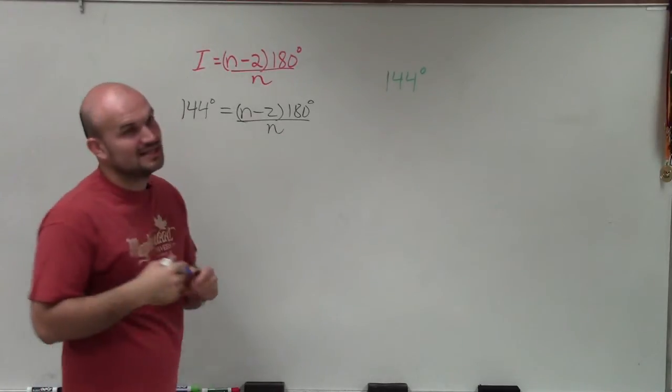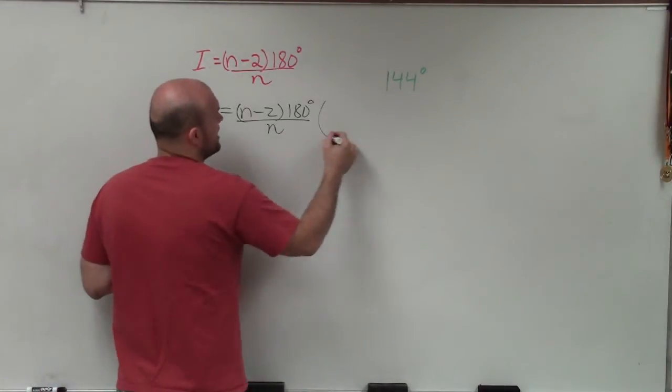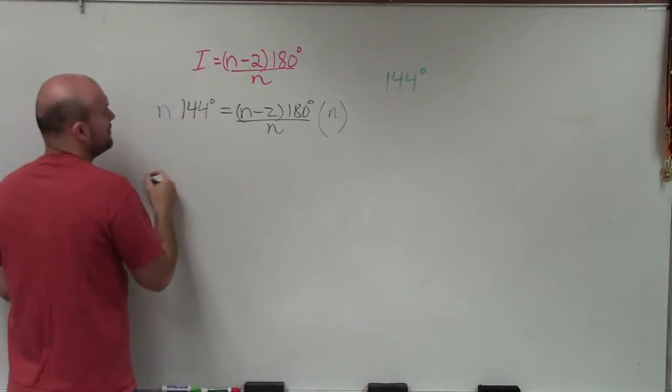The first thing we're going to do is get rid of it outside the parentheses. To do that, I'll multiply by n on both sides.